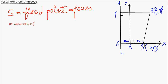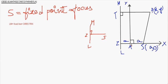Now, what we do is draw SZ, that is this portion, which is perpendicular to LM. This is what we have drawn. So, bisecting SZ at point A. We write that SZ is equal to 2A. So, SA is equal to AZ, which is equal to A.